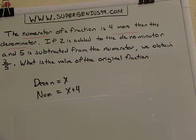So let's read the problem. The numerator of a fraction is four more than the denominator. Two is added to the denominator, and five is subtracted from the numerator. We obtain two-fifths. What is the value of the original fraction?